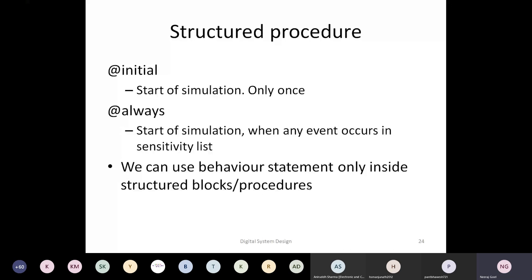What are these events? Events are, for example, your signal changing from zero to one or one to zero — that could be an event. Your signal reaching a particular value, say R equals one, can also be an event. Whenever those events occur, your Verilog simulator will watch for that particular event and then your always block will start executing or simulating.